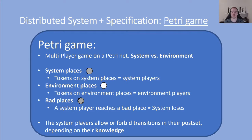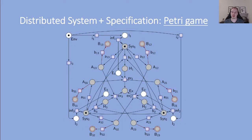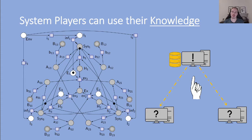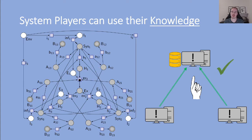Let's look at an example run of the system. The environment chooses computer 1 to be the host. Computer 1 gets informed on this decision. Then it hosts the server and informs computer 2 and 3 about it. These two now know that computer 1 is hosting and connect to it, so that a program execution is possible.